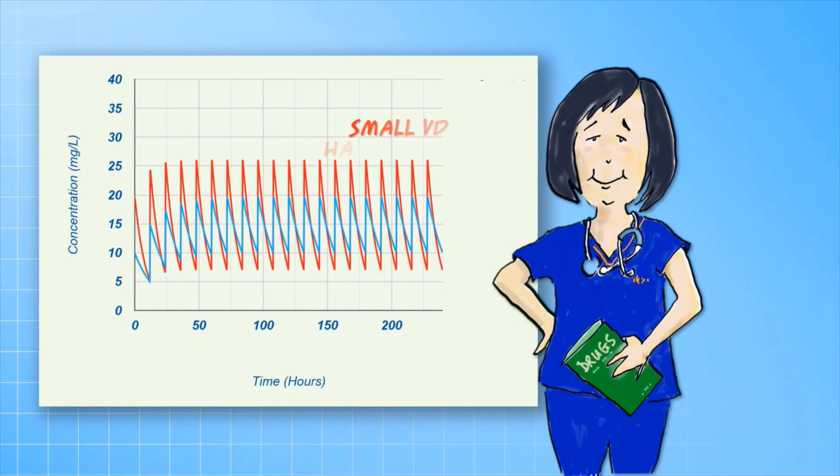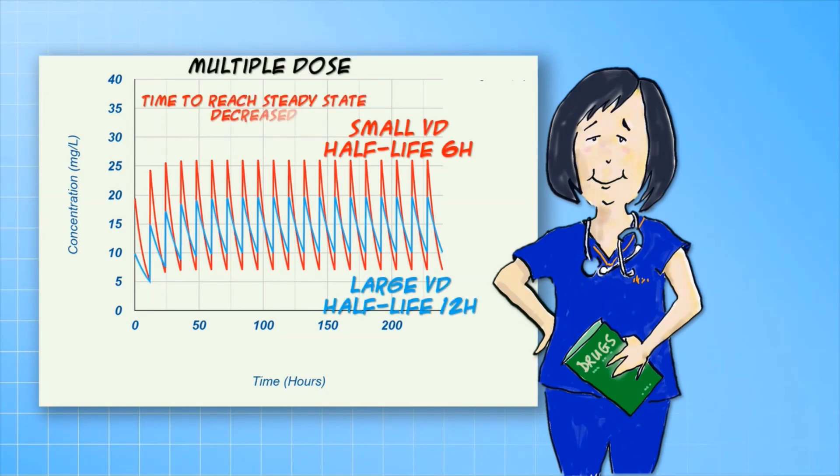In a multiple dose situation, you can see that because the half-life is reduced, the time to reach steady state occurs earlier. Reducing the volume of distribution also increases the fluctuations, although the average concentrations are unchanged. We will talk about this a bit more in subsequent videos, but just to make a note of this for now.